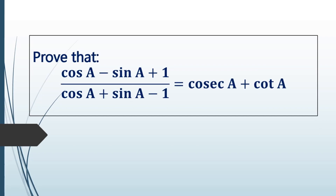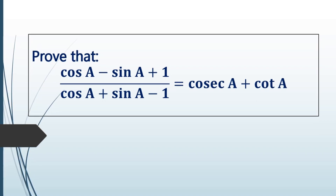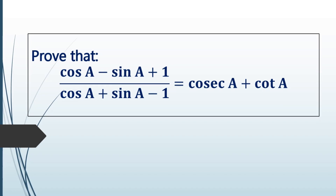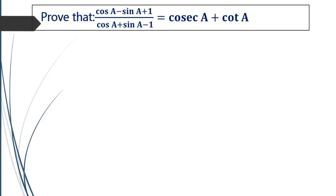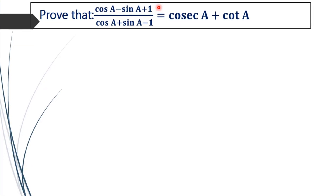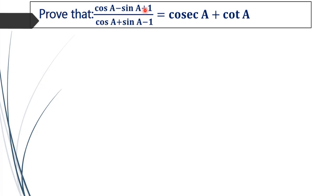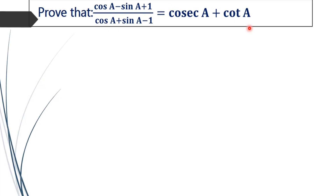Trigonometry. Prove that (cos A minus sin A plus 1) divided by (cos A plus sin A minus 1) is equal to cosec A plus cot A. We have to prove that the LHS of this equation is equal to the RHS, that is (cos A minus sin A plus 1) divided by (cos A plus sin A minus 1) equals cosec A plus cot A.